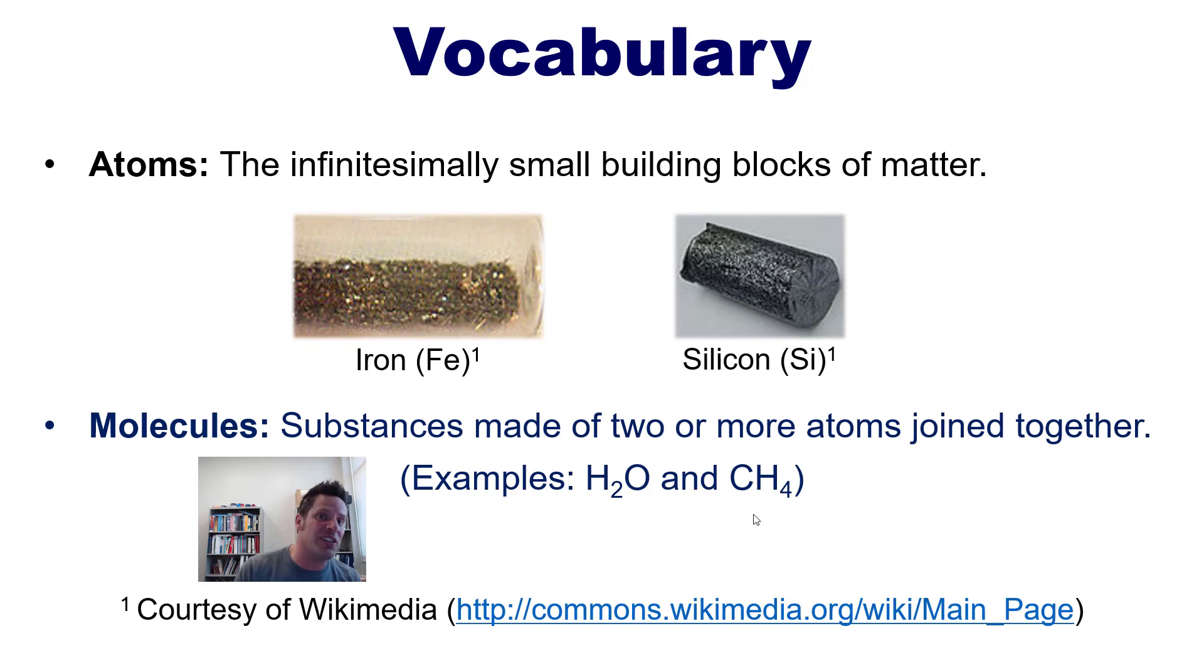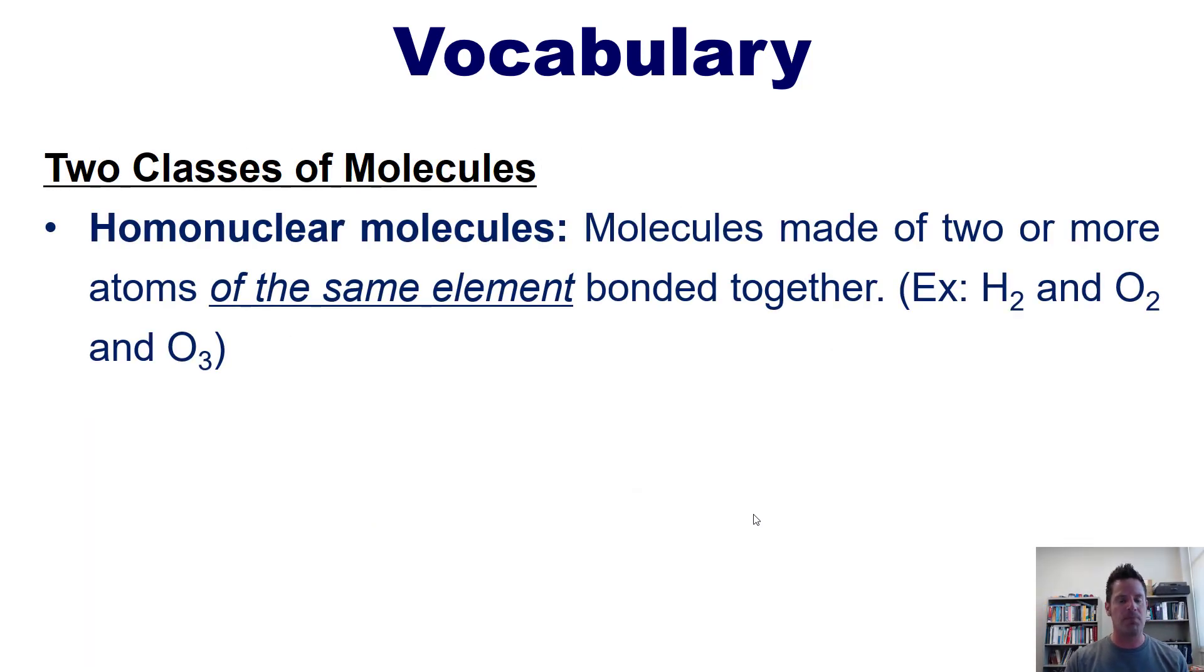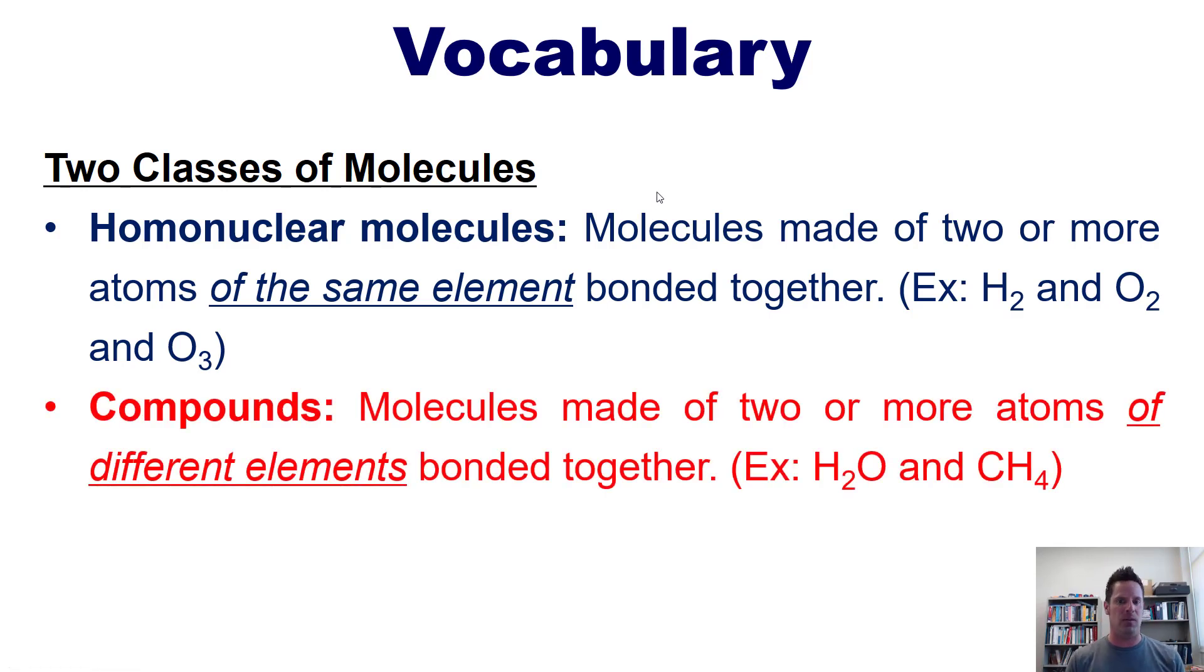Now as it turns out, there are two different classes of molecules. The first is homonuclear molecules. Those are molecules that are made of two or more atoms of the same element bonded or stuck together. Examples include H2 and O2, as well as O3, which is ozone that has a funky smell. The second class of molecule is compounds. These are molecules that are made of two or more atoms of different elements that are bonded or stuck to each other. Examples include H2O and methane, as well as a bunch of other stuff that we'll see later on.